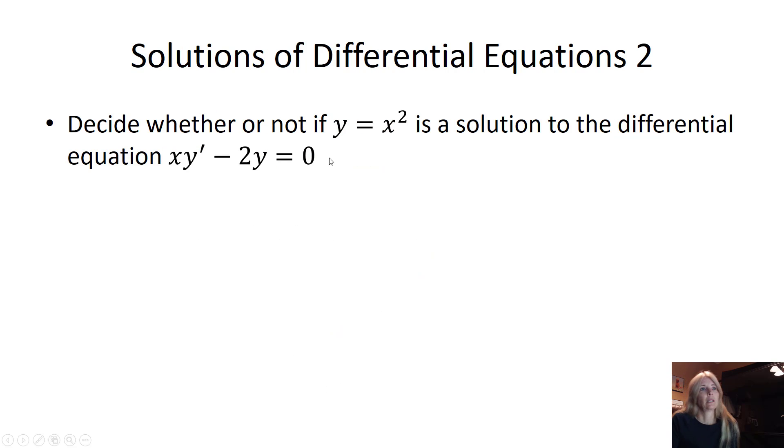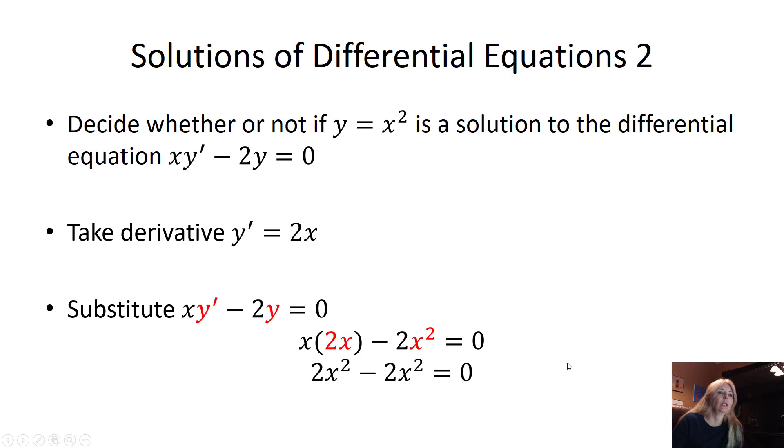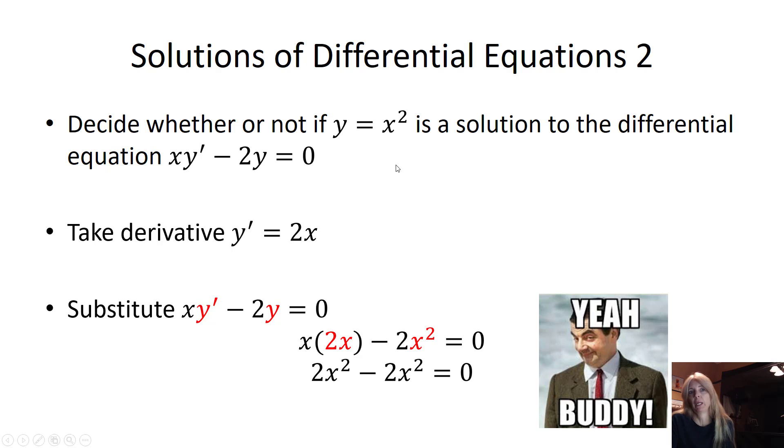Let's try it again. Decide whether or not y equals x squared is a solution to the differential equation. So as you can see, there's a y prime, so it would make sense to take the derivative first. So the derivative of x squared is 2x. Where you see y prime, I'm going to plug in 2x. Where you see y, I'm going to plug in what y equals x squared. And as I do this, you can see that, yeah buddy, the two sides are equal.